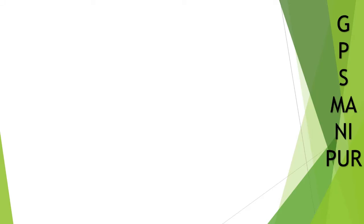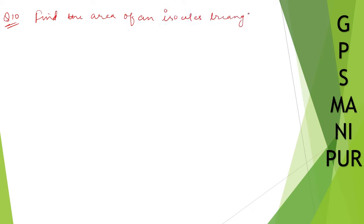Now we are doing exercise 12.1 question number 10. The question is: find the area of an isosceles triangle whose base is 6 cm and perimeter is 16 cm.